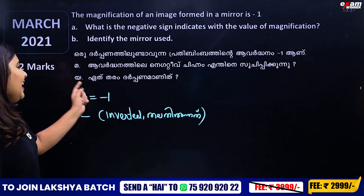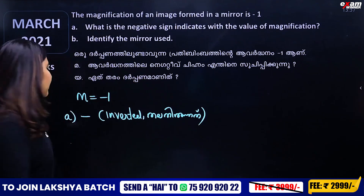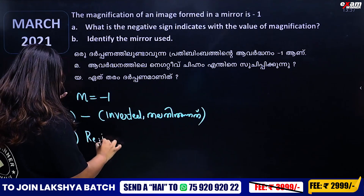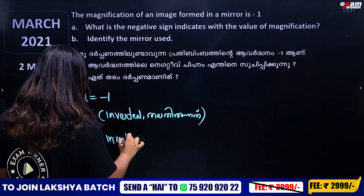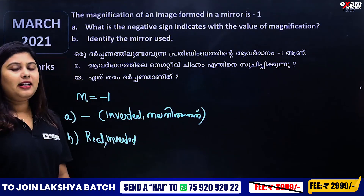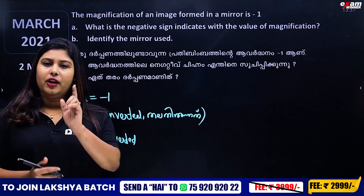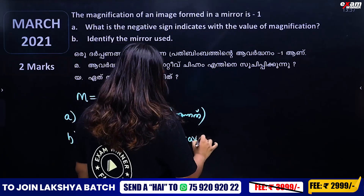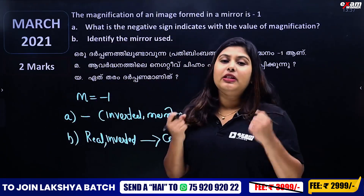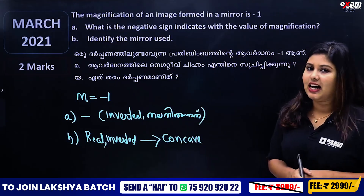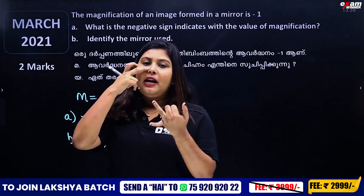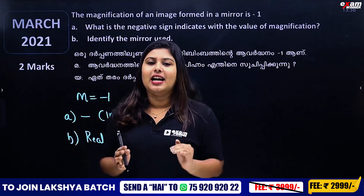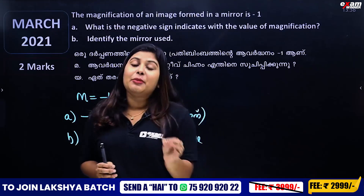Identify the mirror used. What does real and inverted mean? Convex and plain mirrors give a virtual and erect image. A real image is formed by a concave mirror. So the answer is a concave mirror.